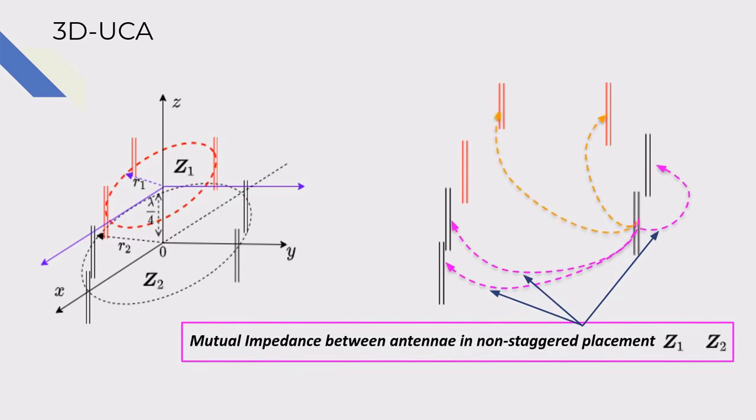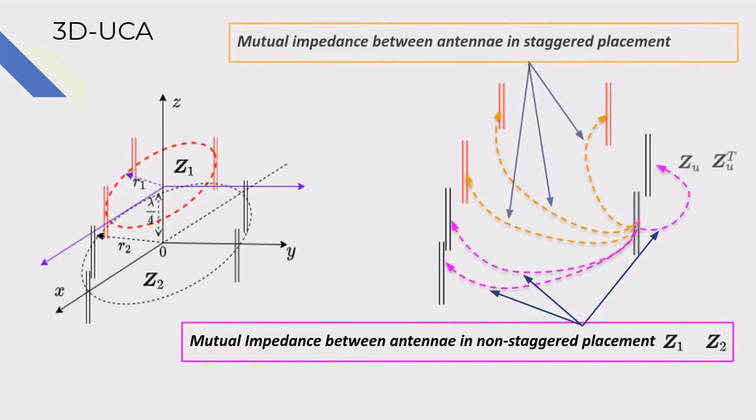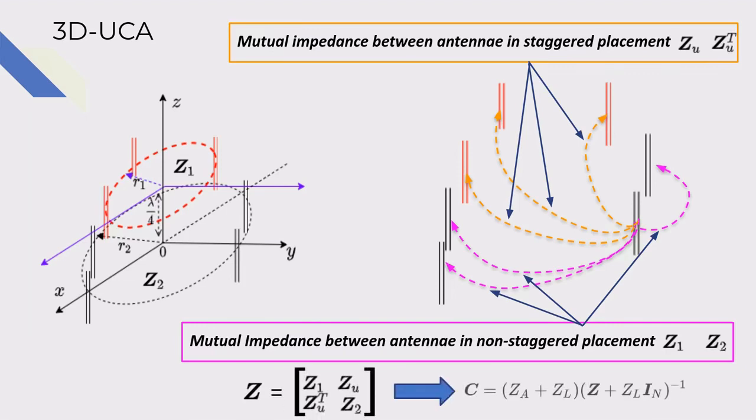The mutual couplings between the first and second array can be obtained using an induced electromotive force solution of parallel in echelon array arrangement. And combining them achieves the mutual coupling matrix of 3D UCA.